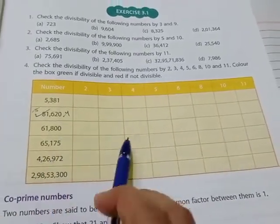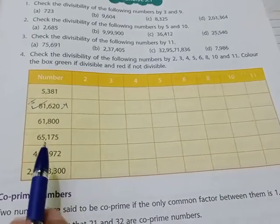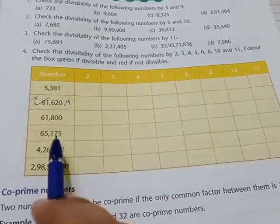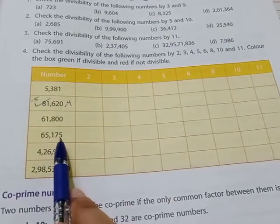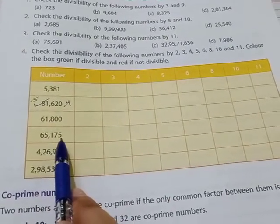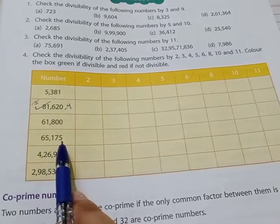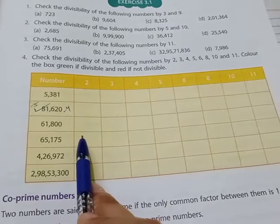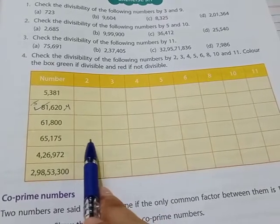One's place we will see, na? One's place - is it even number? One's place given, five - is it even number? No, na? So which color we will do here? Red color, yes. So you will color this box with red.